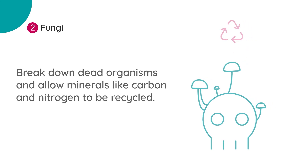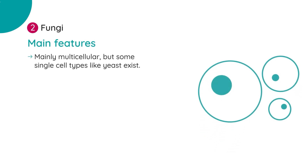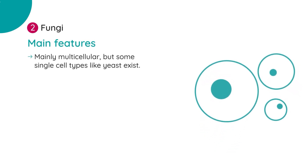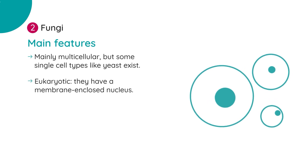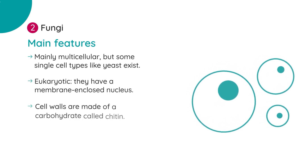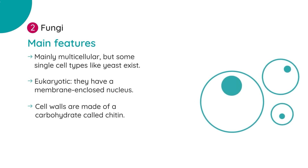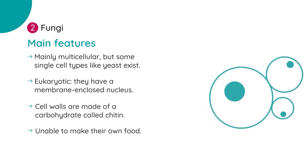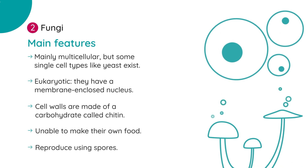Main features of the fungal kingdom include: they are mainly multicellular but some single-celled types like yeast exist; they are eukaryotic, they have a membrane-enclosed nucleus; cell walls are made of a carbohydrate called chitin; they are unable to make their own food; and their method of reproduction involves spores.